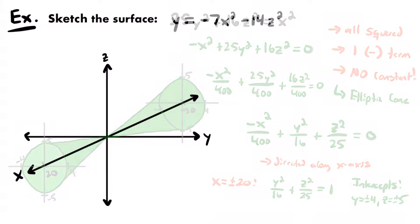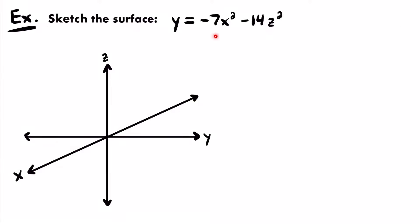Let's move on to the next example. We want to sketch the surface represented by: y = -7x² - 14z². The first thing I notice is that we do have three variables — x, y, and z — but only two of them are squared. X is squared and z is squared, but not y. Y is to the first power — a degree 1 variable. There are only two quadric surfaces where this happens: it's going to be some type of paraboloid, either an elliptic paraboloid or a hyperbolic paraboloid.